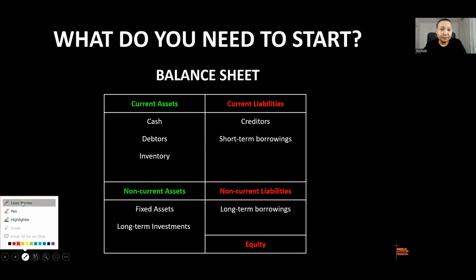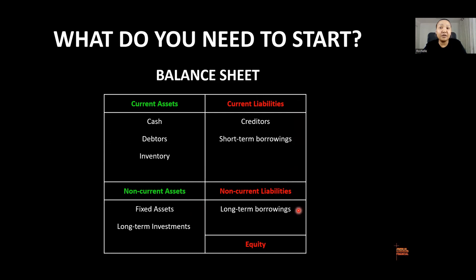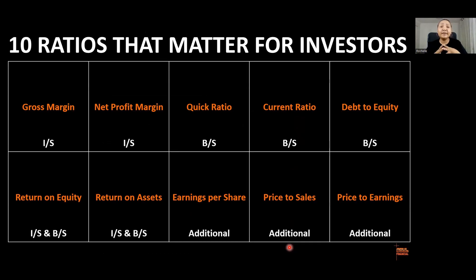On the balance sheet we discussed short-term assets and long-term assets. Examples of short-term assets include cash, debtors, and stock. On the long-term assets side we have property, plant and equipment — the fixed assets we're going to use long-term — and some long-term investments. On the flip side we have current liabilities like creditors and borrowings, then long-term liabilities and shareholders' equity. We'll use the income statement and balance sheet as our base for the ratios.